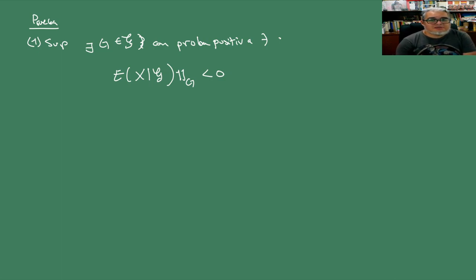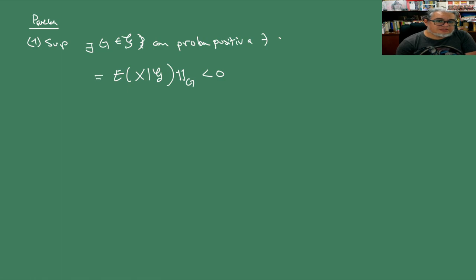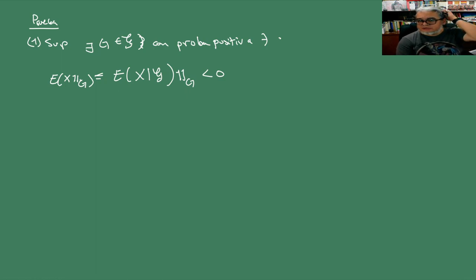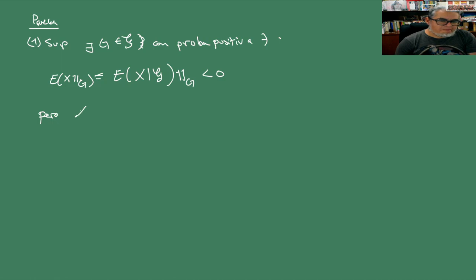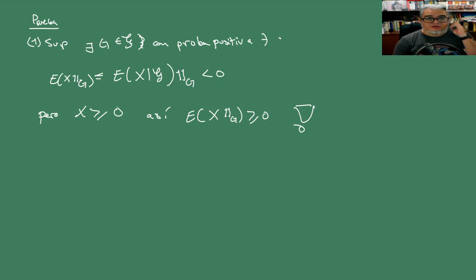Entonces, la esperanza de ese término va a ser menor que cero. Pero eso lo que nos está diciendo es que, según el ejercicio que vimos hace rato, para esa G es menor o igual que cero, menor estricto que cero. Pero la X la pedimos que fuera mayor o igual que cero. Así que la esperanza de X por la indicadora tendría que ser mayor o igual que cero, lo cual estamos diciendo que no. Entonces no es posible que exista esa G, y ya queda demostrada la parte 1.